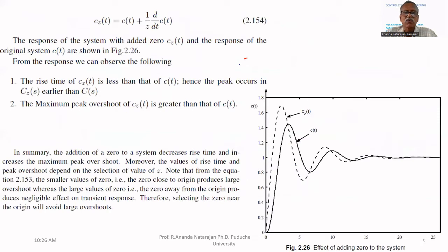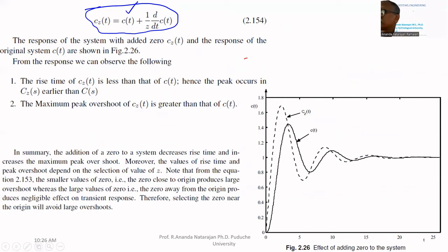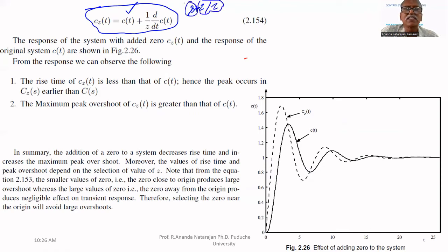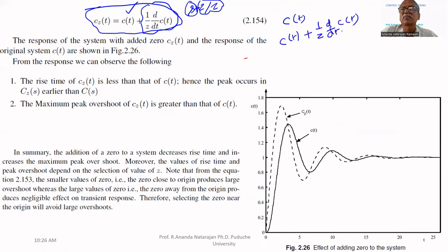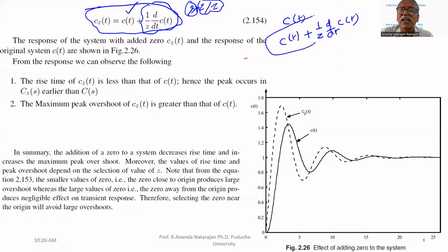Therefore, the response of the compensated system C_Z(T) equals C(T) plus (1/Z) times d/dt of C(T). The response of the uncompensated system is C(T). Because of adding a zero to the system, the response is modified: the derivative of C(T) is added. So the compensated response is C(T) plus (1/Z) * d/dt of C(T).